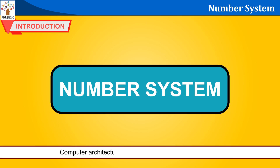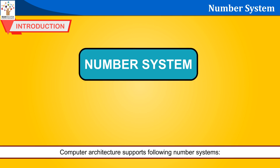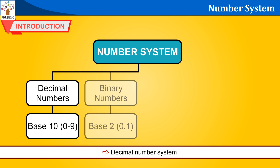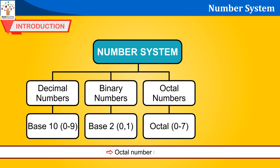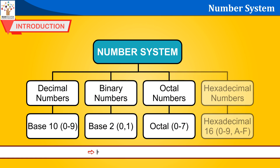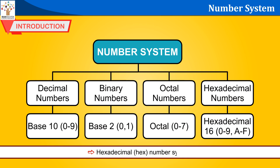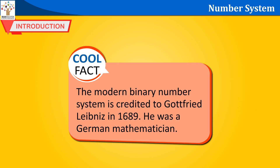Number system is a technique to represent numbers in the computer system architecture, where every value that you are saving or getting into or from computer memory has a defined number system. Computer architecture supports the following number systems: decimal number system, binary number system, octal number system, and hexadecimal number system. Cool fact: the modern binary number system is credited to Gottfried Leibniz in 1689. He was a German mathematician.